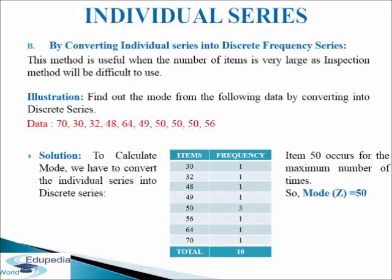To calculate mode we have to convert the individual series into discrete series. For that, first we will make a table of two columns. In the first column we write items in ascending order: 30, 32, 48, 49, 50, 56, 64, and 70. In the second column we write frequency, meaning how many times the item has occurred. 30 came only one time, 32 came one time, and so on. Item 50 has occurred three times, which is the maximum number of times. So mode is equal to 50. This is how we calculate mode by converting individual series into discrete frequency series.